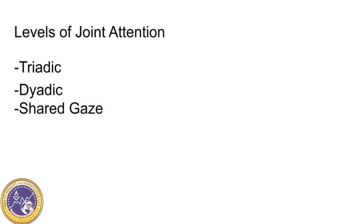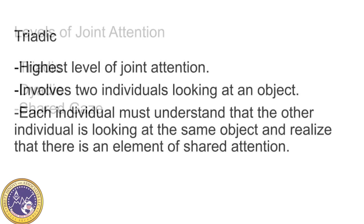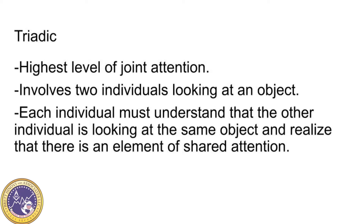There are three types of joint attention: triadic, dyadic, and shared gaze. Triadic is the highest level of joint attention. It involves two individuals looking at an object. Each individual must understand that the other individual is looking at the same object and realize that there's an element of shared attention.